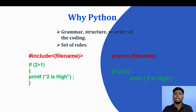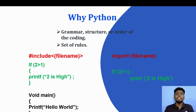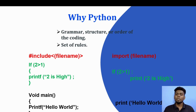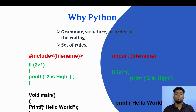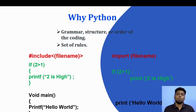If 2 is greater than 1, then it will execute. So if we print '2 is high', then we print 2. This is the syntax. Now, if you print 'Hello World' using a C program, you use the full C syntax. But in Python, print hello world is much simpler and automatic. That is why Python is very easy and convenient to use.